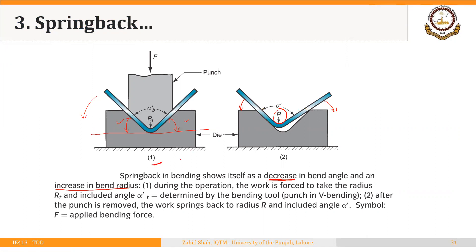In figure one, during the operation the work is forced to take the radius r subscript t and angle alpha dash, as determined by the bending tool. So this radius r subscript t will depend upon the radius of the punch in the case of V-bending. After the punch is removed, the work springs back to radius r and included angle alpha dash.